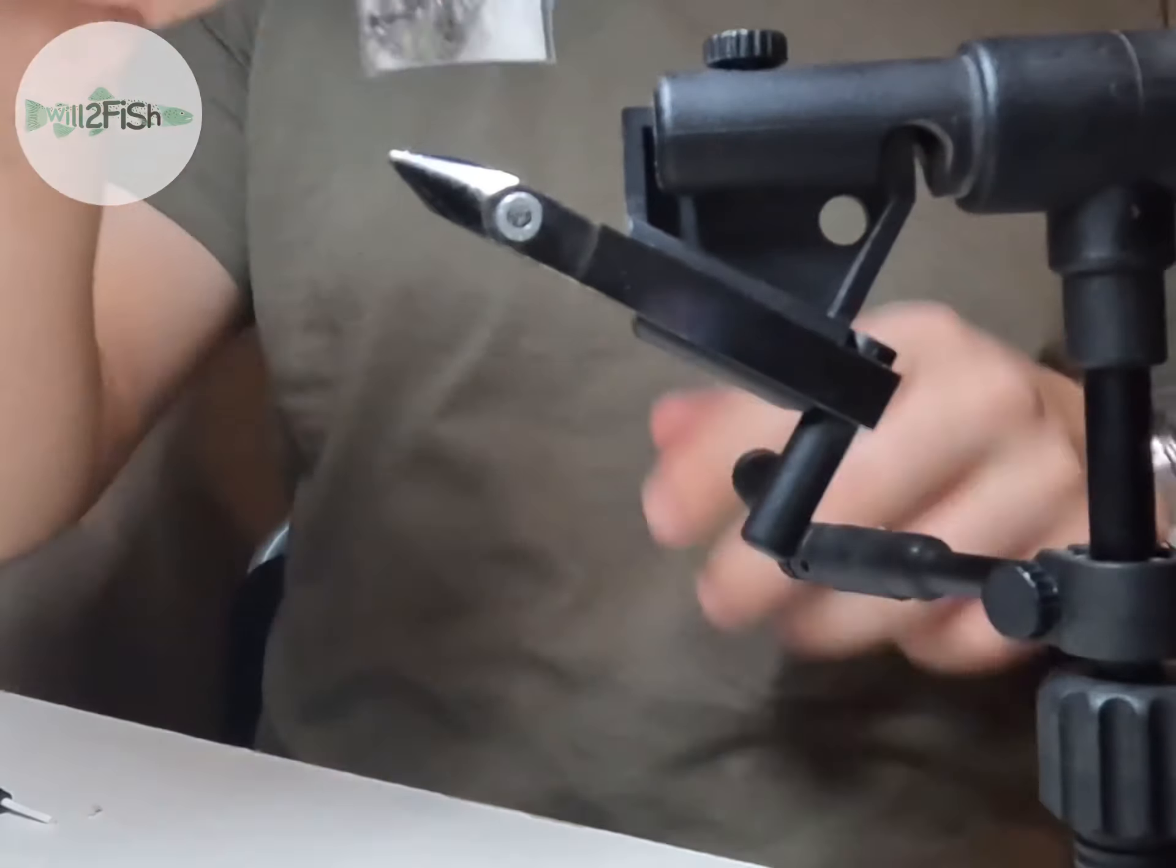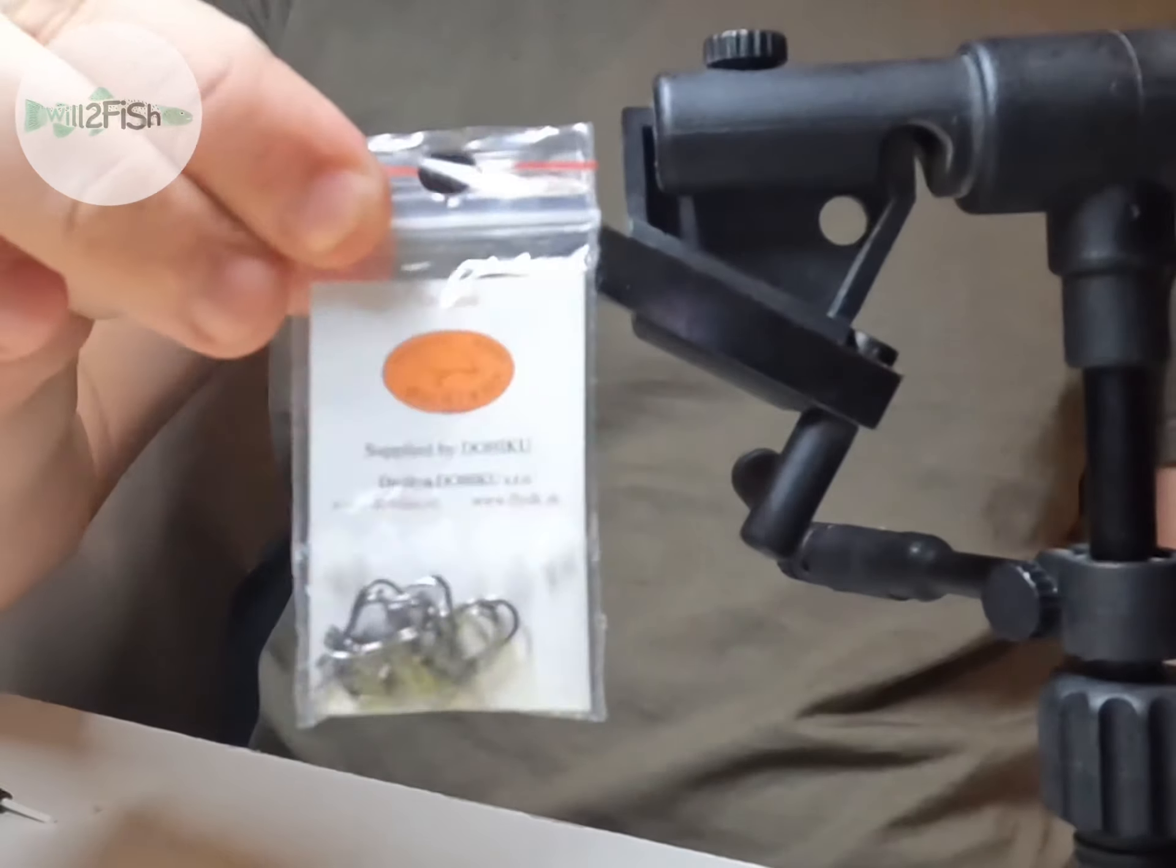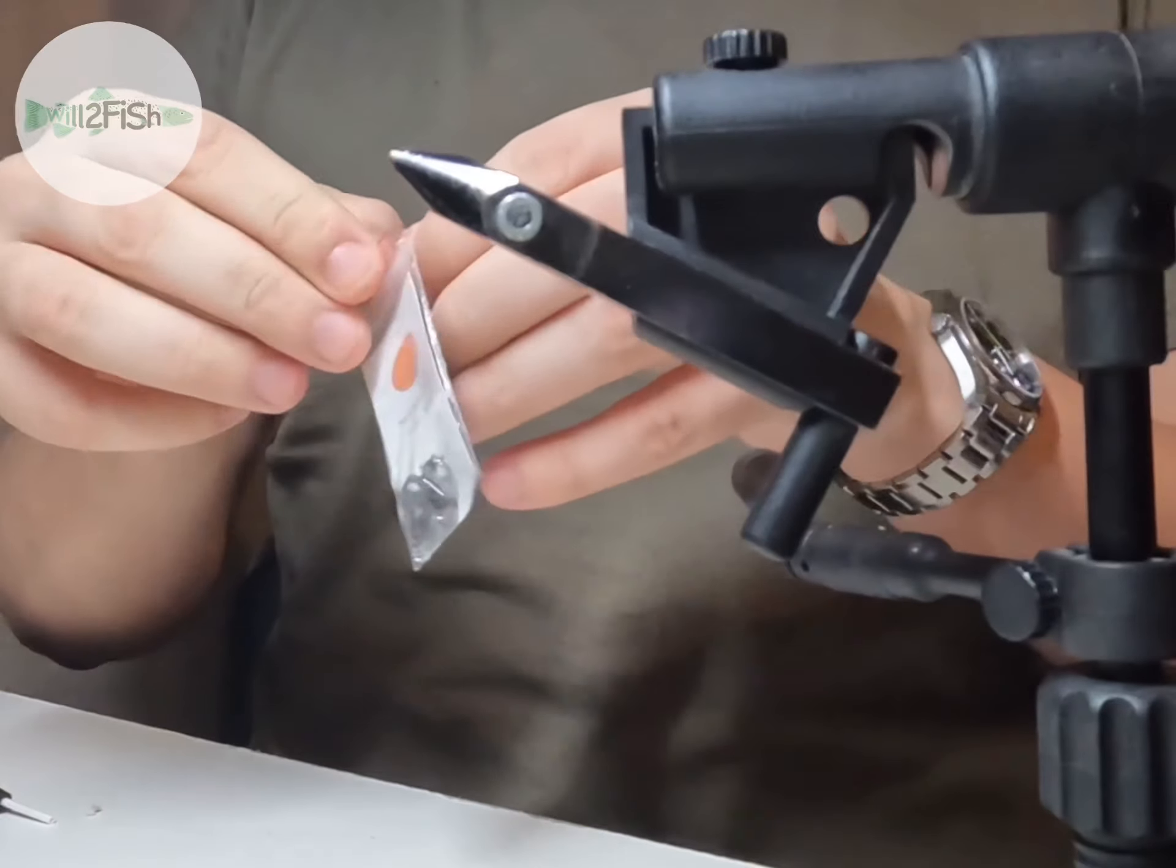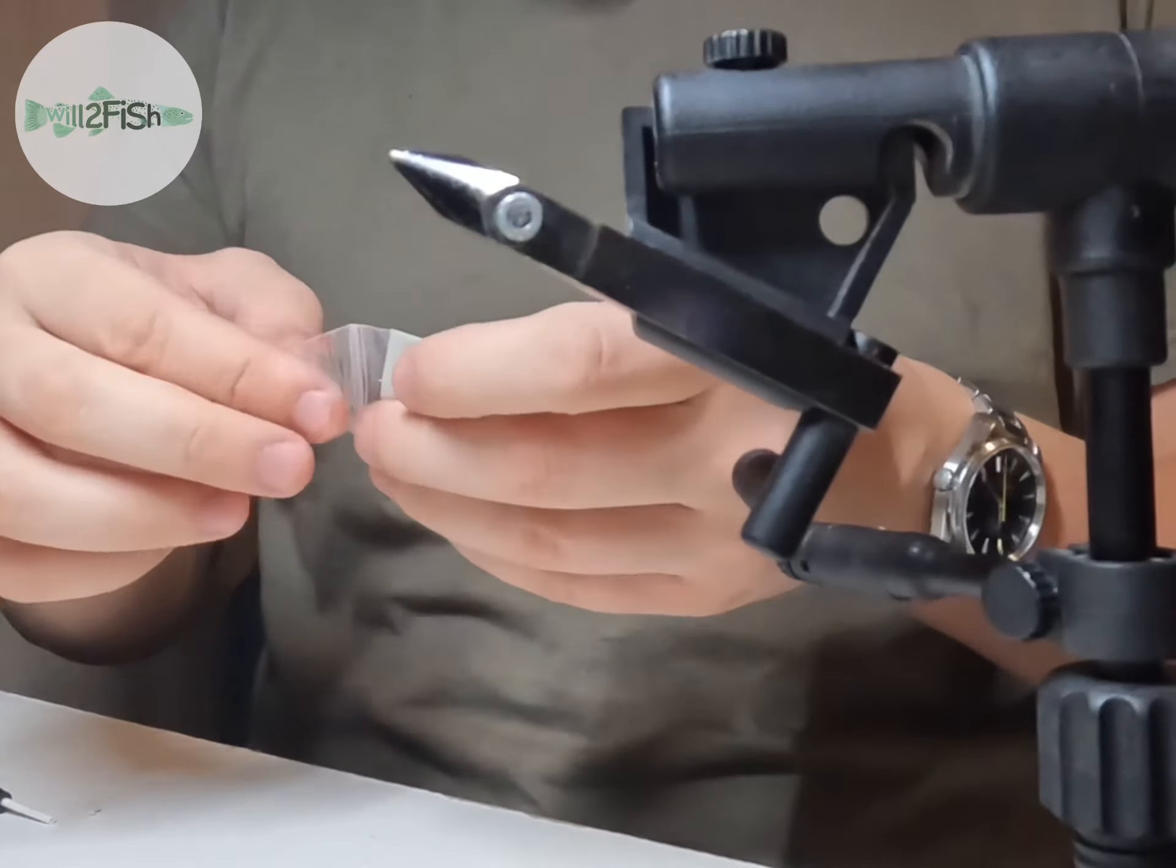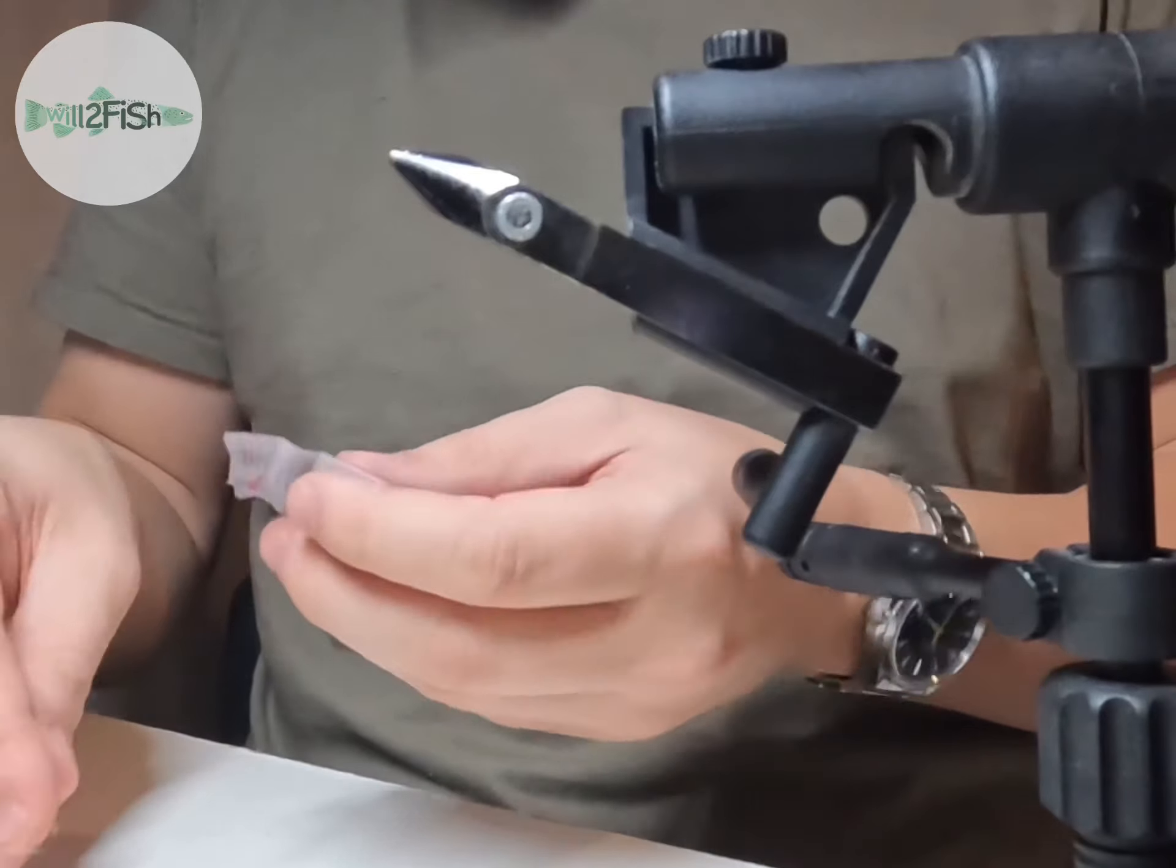Hi everyone, I'm going to show you a simple egg recipe for steelhead and salmon. I've got a size 12 hook here. All you need is the hook, some yarn and some thread.